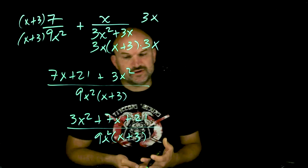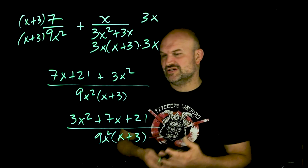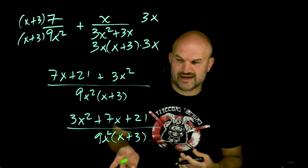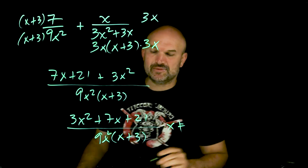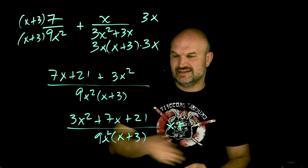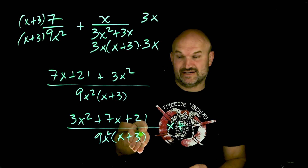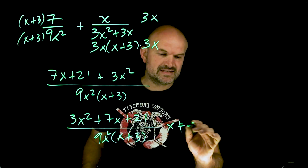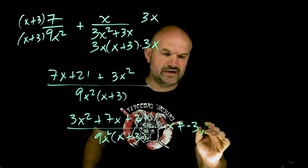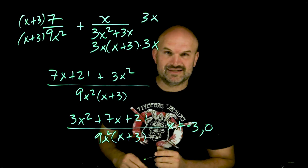The important thing is we do want to make sure we mention our excluded values — the values that make the denominator equal to zero. In this case that's negative three and zero, so x cannot equal negative three as well as zero.